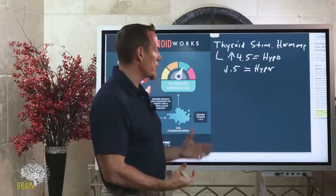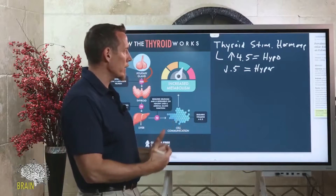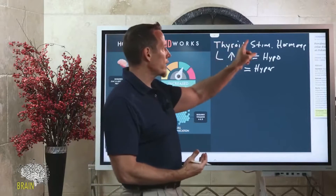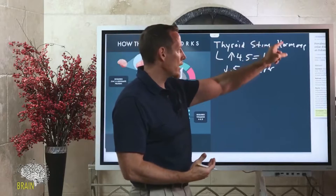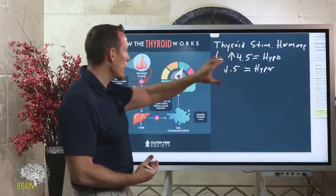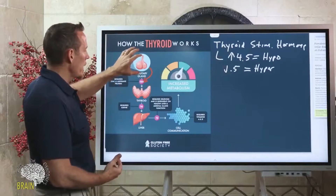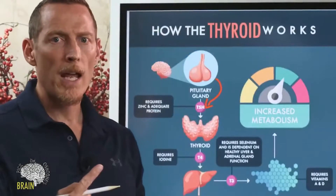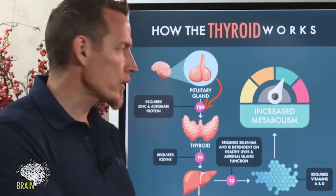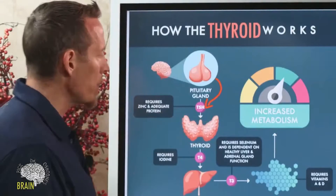It's very common that they're regulating your medicine or making decisions based only on TSH. Why is that important to understand? Because TSH is made by the pituitary gland — it's only one hormone, and it's not thyroid hormone; it's just the hormone that stimulates the thyroid gland.